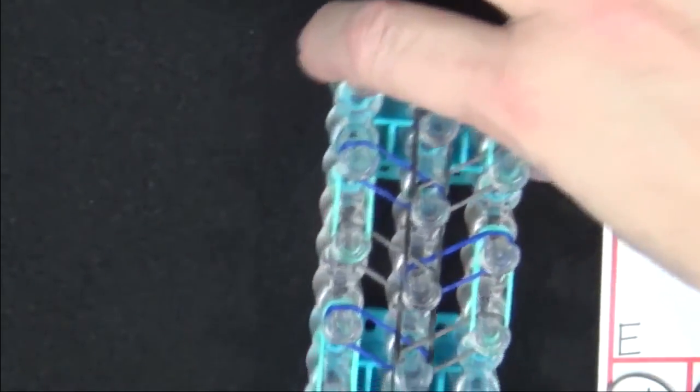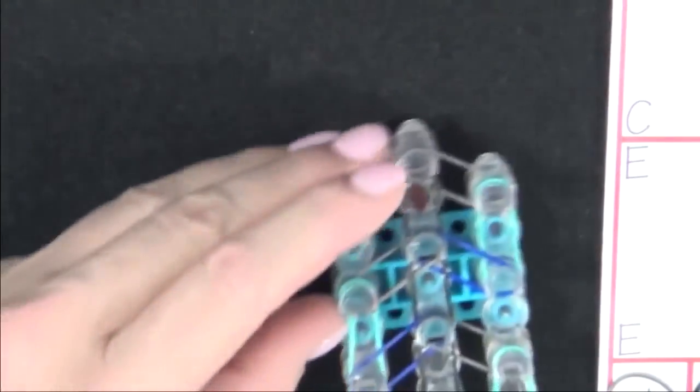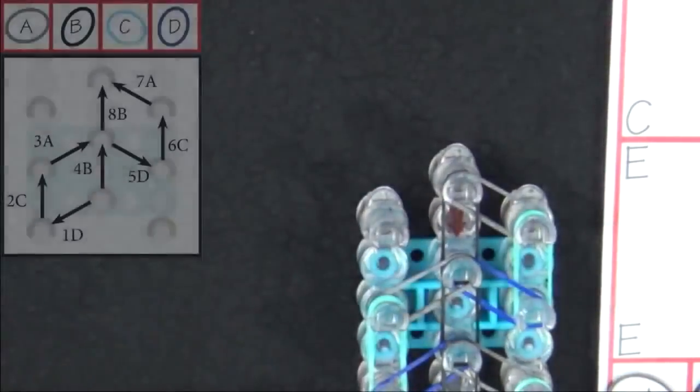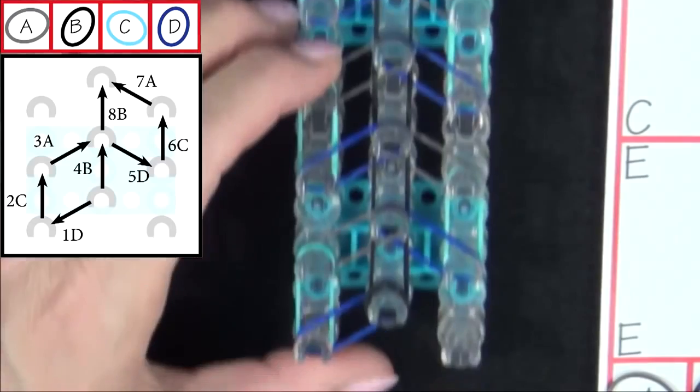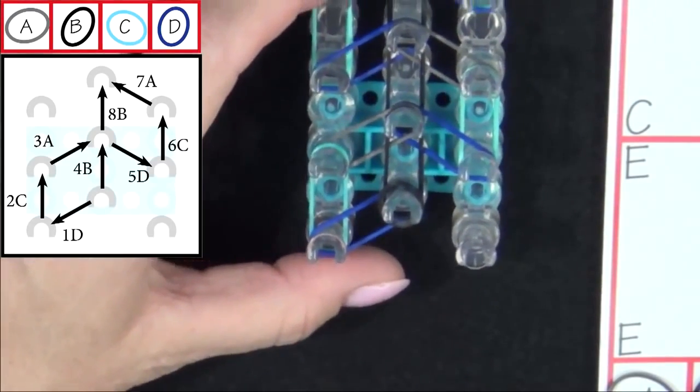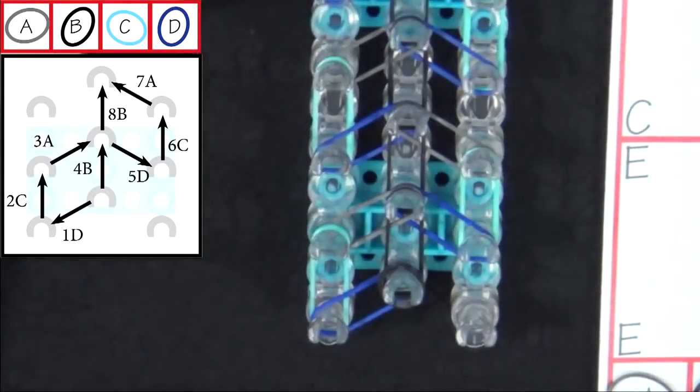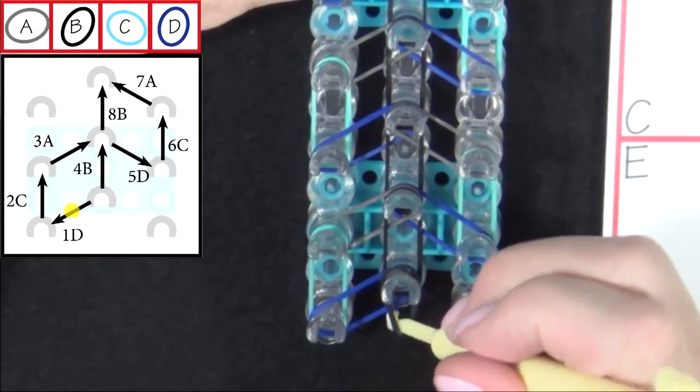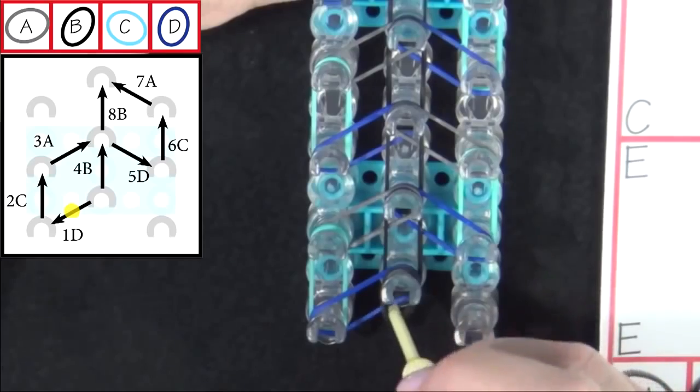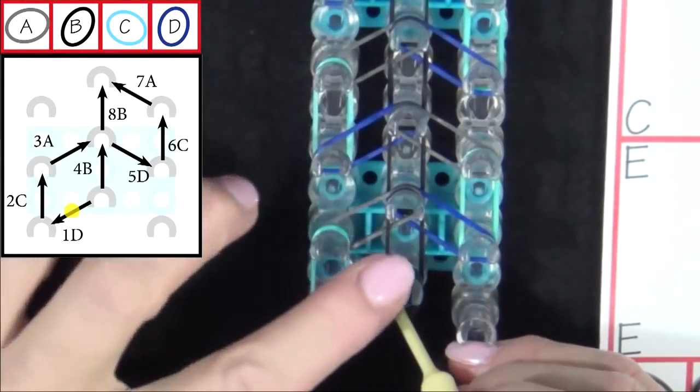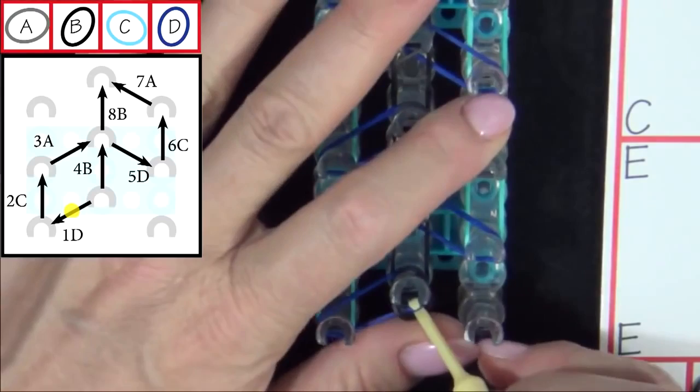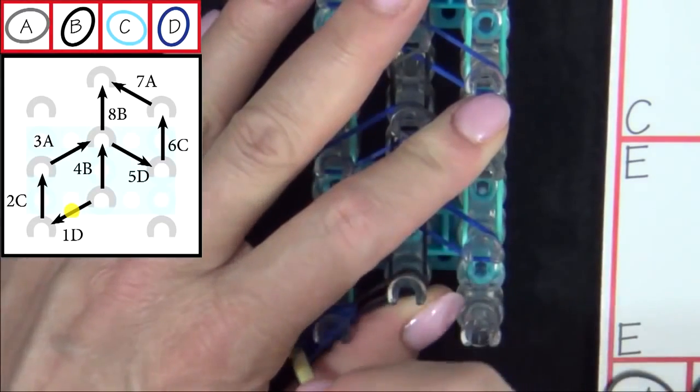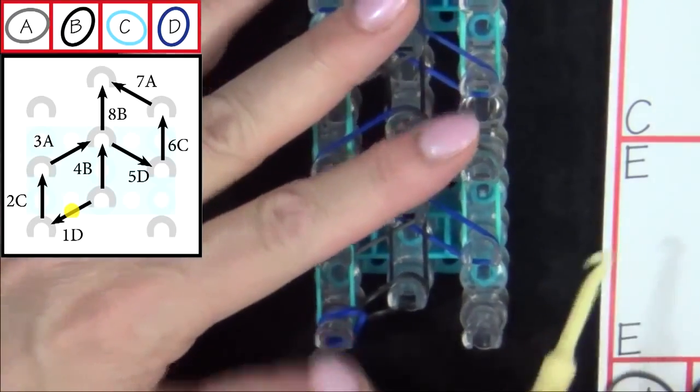Now we're ready to start looping the bands. Place your loom so that the red arrow is pointing toward you. Refer to the graphic on your screen as we loop the first eight bands. We'll start from this center pin with your hook. You'll pull back the cap band. Grab band 1D. Make sure you grab your D band, pull that up, hold the cap band down with your thumb, and pull that band out.